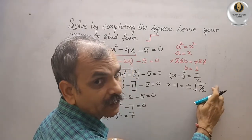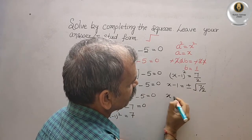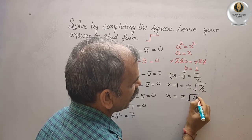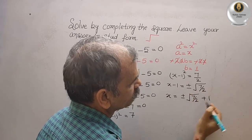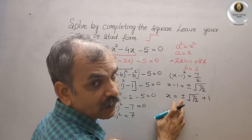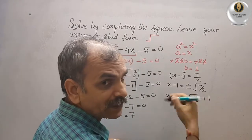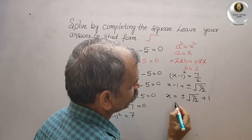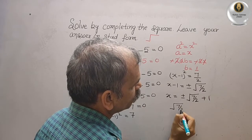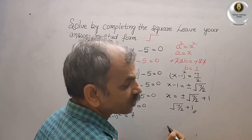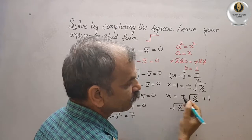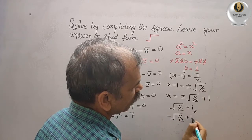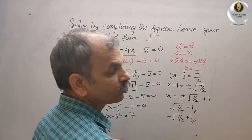Bring minus 1 to this side: x equals plus or minus root over 7 by 2, plus 1. So the first solution is x equals root(7/2) plus 1, and the second solution is x equals minus root(7/2) plus 1. These are your two solutions for this equation.